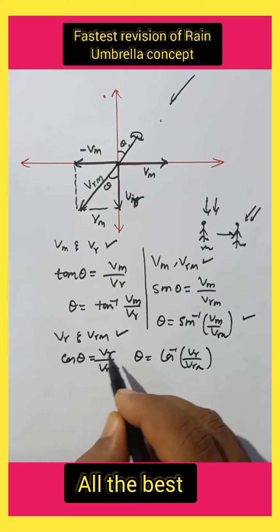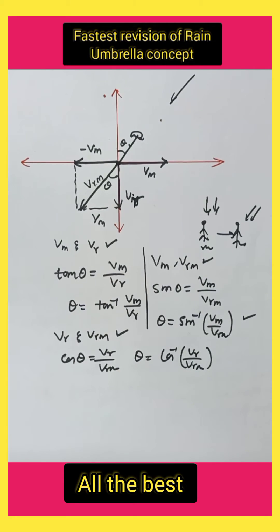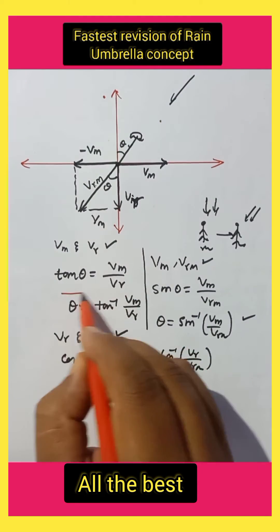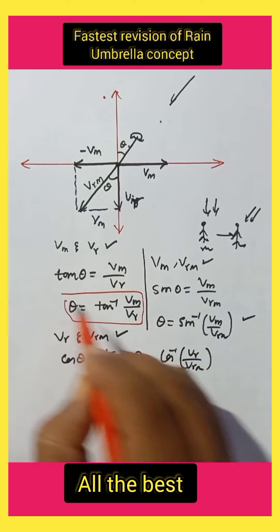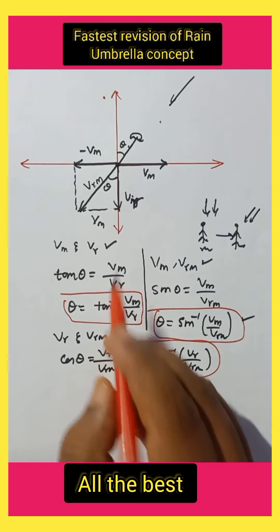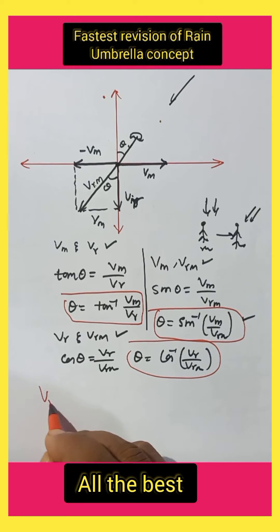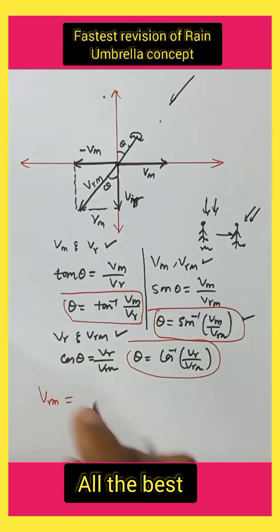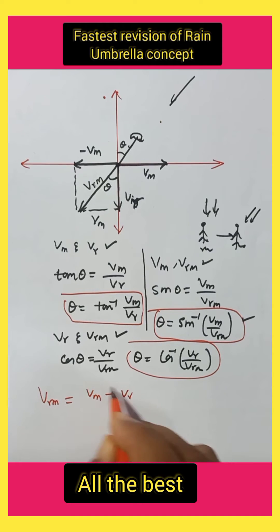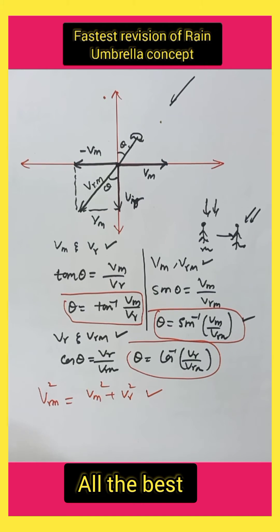So these are the three methods to find the angle: theta equals tan inverse of Vm by Vr when Vm and Vr are given; sin inverse of Vm by Vrm; or cos inverse of Vr by Vrm. To find the resultant velocity, Vrm equals the square root of Vm squared plus Vr squared, according to Pythagoras' theorem. Using this identity, you can find out anything.